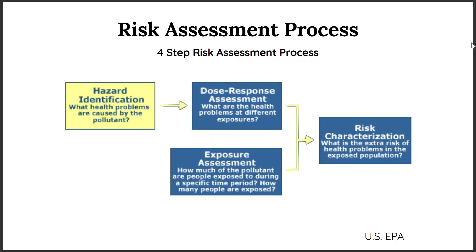I wanted to start by looking at this process. This is how EPA, other environmental agencies, public health, and environmental health professionals look at hazards in the world. We do a lot of very fancy stuff, but very often it breaks down into these four basic steps. Starting on the left, we ask: is there some kind of pollutant, a stressor, that people are being exposed to that might cause a problem? Could be an air pollutant, water pollutant, heat, a safety issue — anything that could harm people should go in that box.